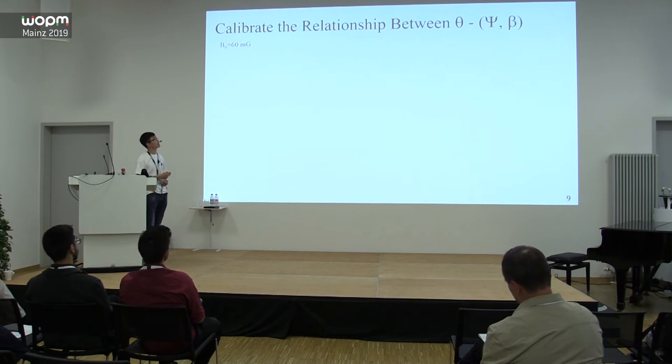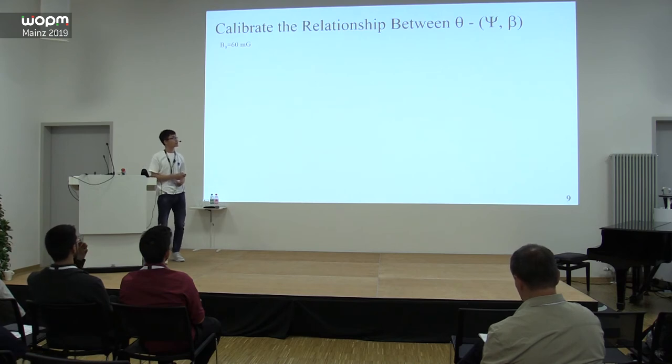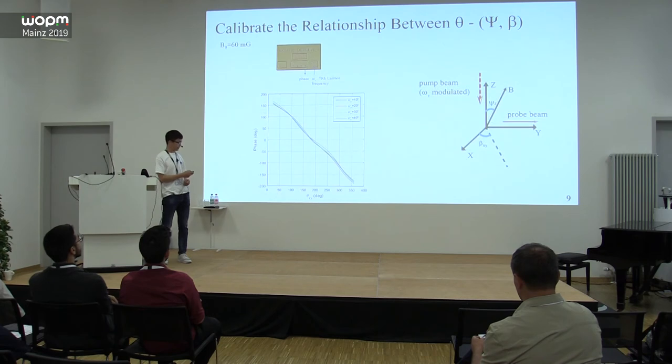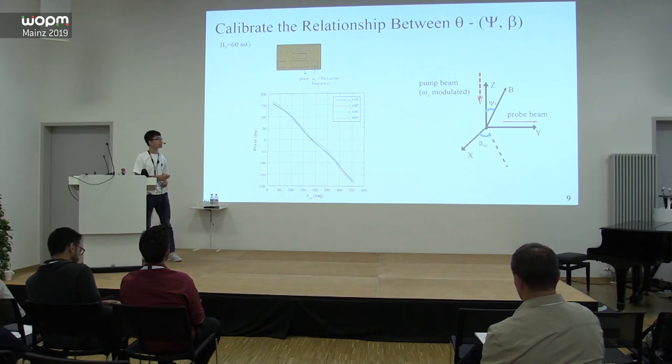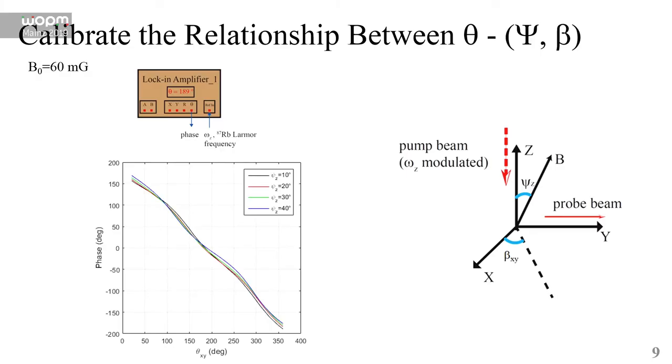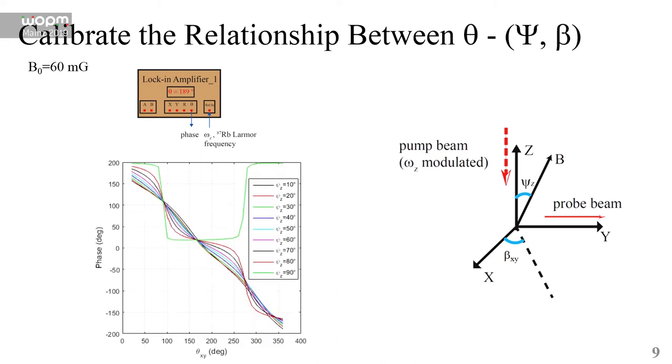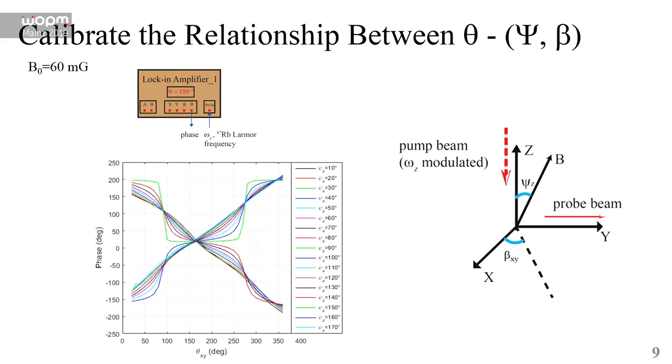To perform our vector magnetometry, we need to calibrate the relationship between the phase output θ with the angles ξ and β. Here is the data from the first lock-in amplifier. We generate a database for such a relationship. Every line in this figure is acquired when we fix ξz and scan βxy. We plot such a relationship between θ and βxy for different ξz from 10 degrees to 40 degrees, 90 degrees, and then to 170 degrees.